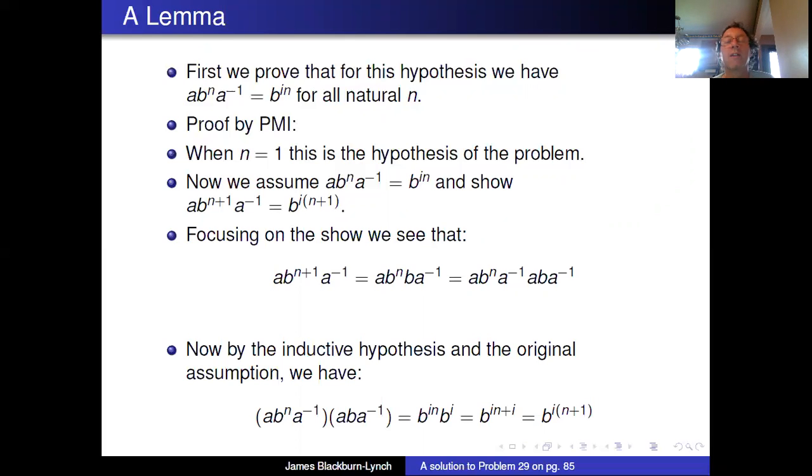So we know the first three, ab^n a^(-1) is b^(in). Notice that is what's at the top of the screen here, that is our inductive hypothesis. And a times b a^(-1), that is b^i, again that is the hypothesis of the original problem which we are assuming here. So the first three give us b^(in), the second give us b^i, we add our exponents and we get the result.